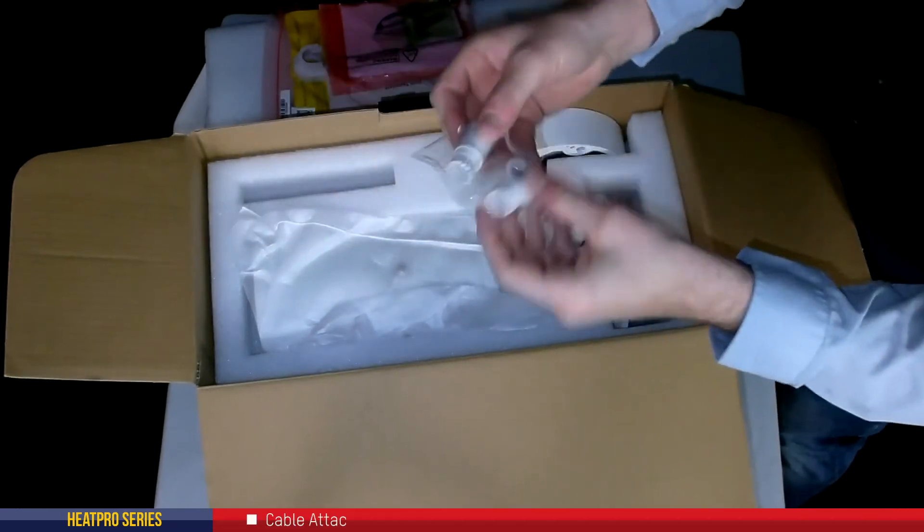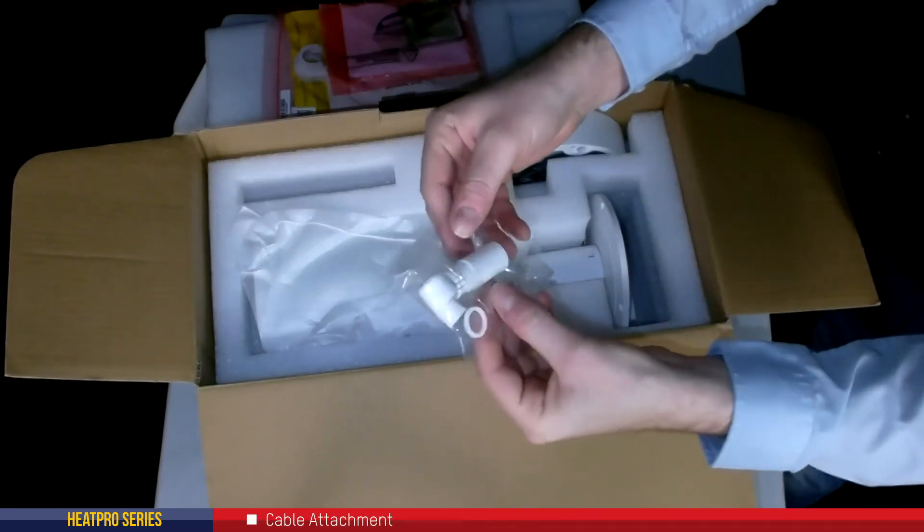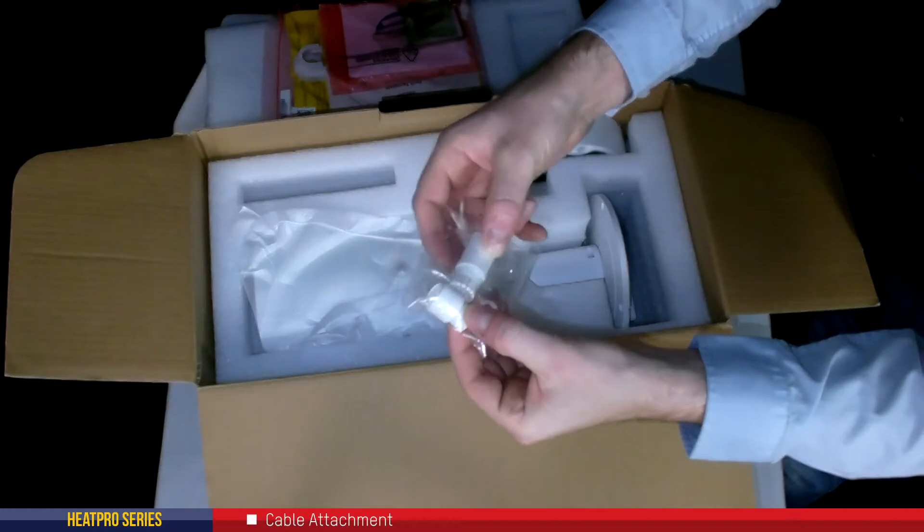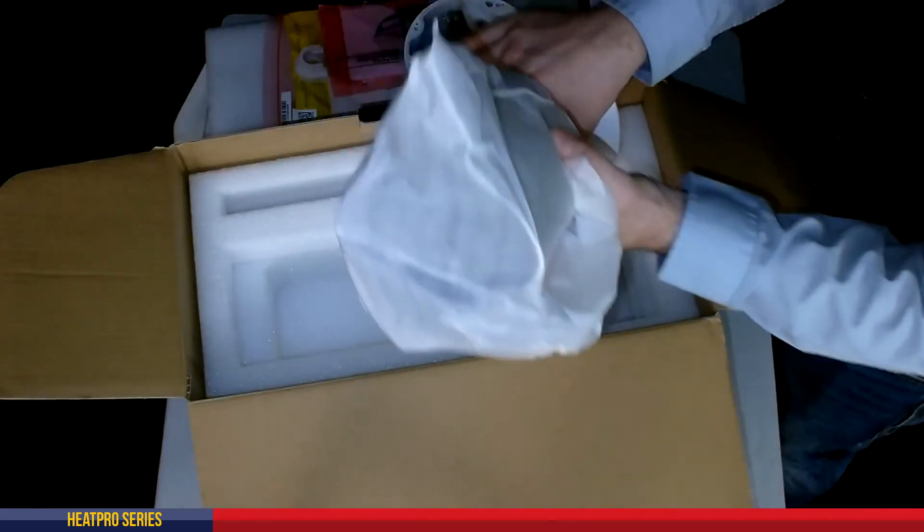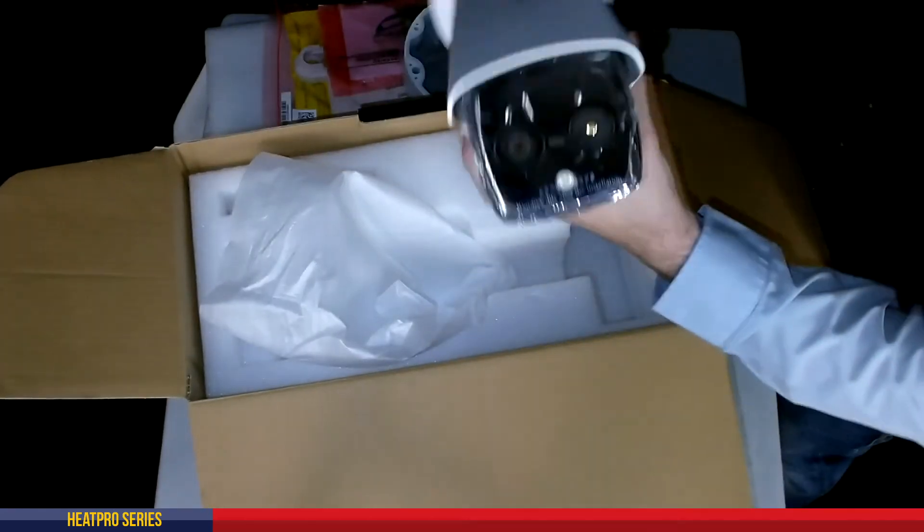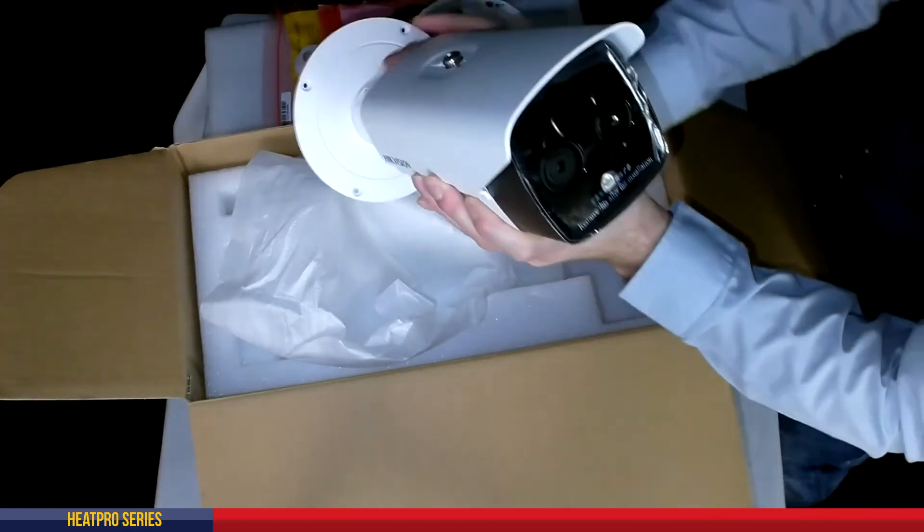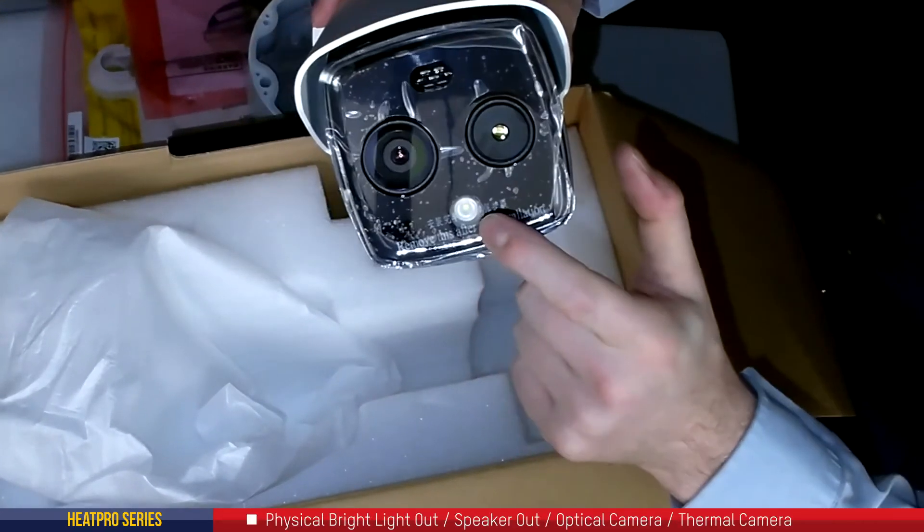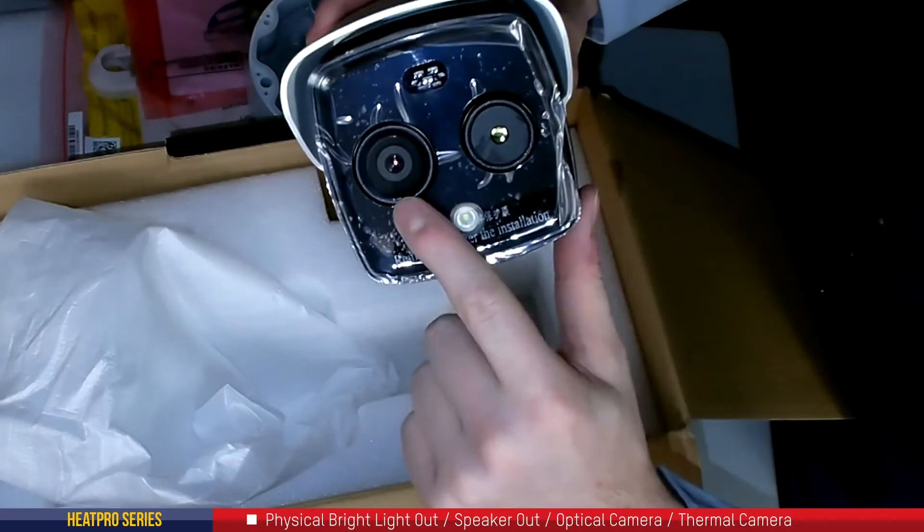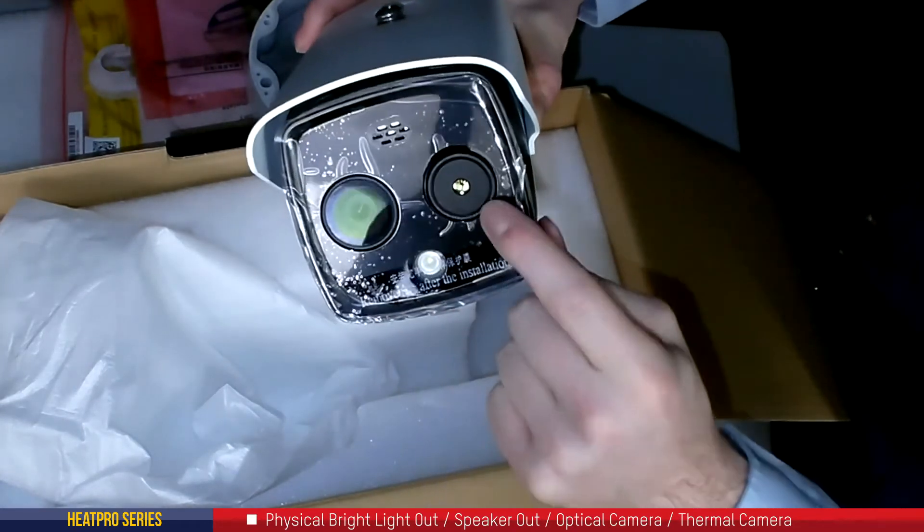We also have our cable attachment as well to give it that waterproof attachment for your Cat5 or Cat6 cable. And if we take a look at the front of the camera now, this is the front of the actual camera itself. We've got the physical white light out, the speaker out, the optical camera, and then here we've got the thermal camera.